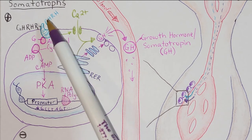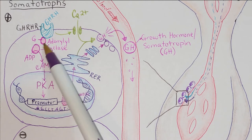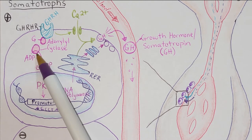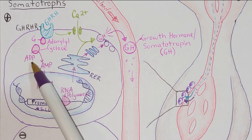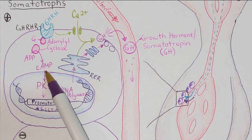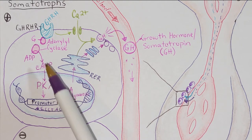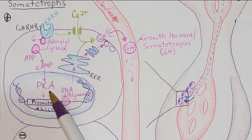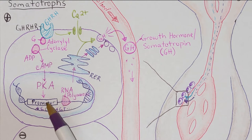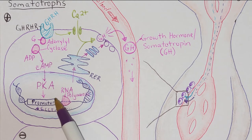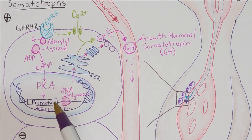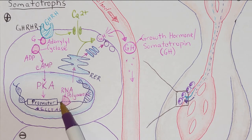The G protein activates adenylyl cyclase, which creates cyclic AMP, which activates protein kinase A, which in this particular scenario is going to act as a transcription factor, therefore increasing the expression — that is, the transcription — of particular genes.